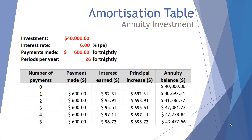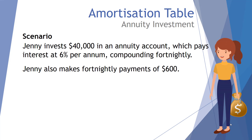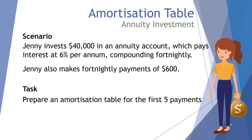Welcome mathematicians. In this video we'll be looking at an amortization table focusing on an annuity investment. The scenario for today: Jenny invests $40,000 in an annuity account which pays interest of 6% per annum compounding fortnightly. Jenny also makes fortnightly payments of $600. An annuity is like a savings account where you put money in, it gains interest, and in this case it's an annuity investment where we're adding additional payments on top to maximize savings. The task is to prepare an amortization table for the first five payments.